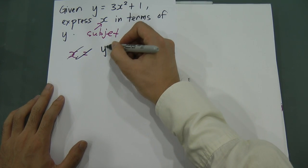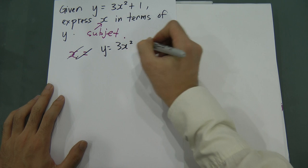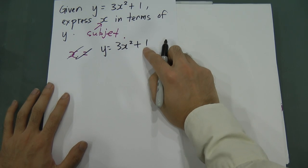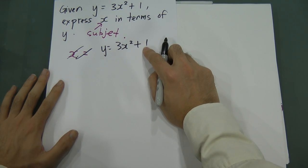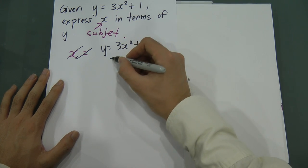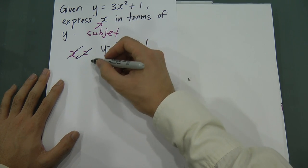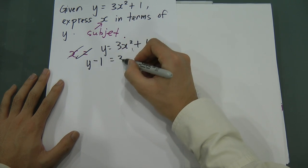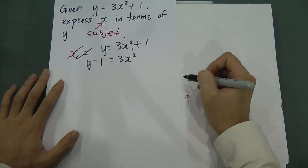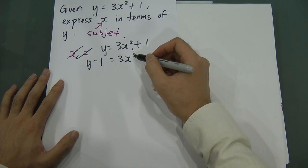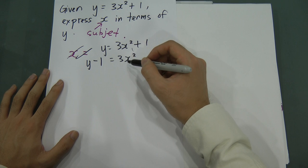It's very simple. First thing, I write down the equation: 3x squared plus 1 equals y. Because I want to make x only, everything except x I throw to the other side. So I move the plus 1 first — this becomes y minus 1. And then I have 3x squared on the left.